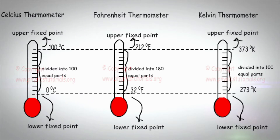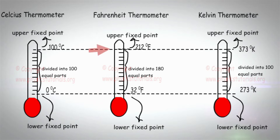In the Celsius scale, the lower fixed point is 0 degrees Celsius, the upper fixed point is 100 degrees Celsius, and the length of the thermometer between these two points is divided into 100 equal parts. In the Kelvin scale, the lower fixed point is 273 Kelvin, the upper fixed point is 373 Kelvin, and the length between these two points is also divided into 100 equal parts.